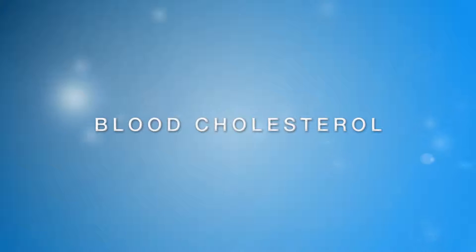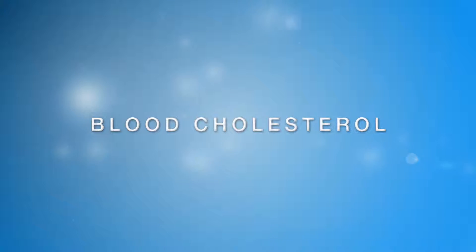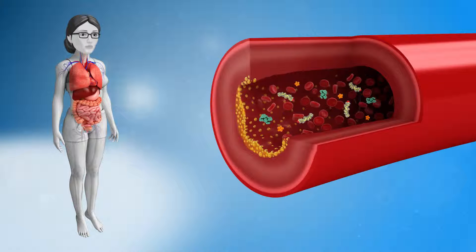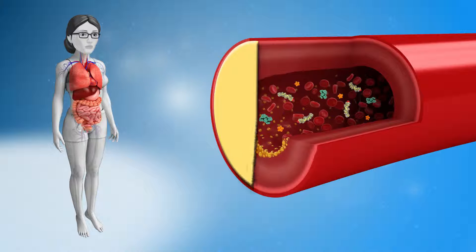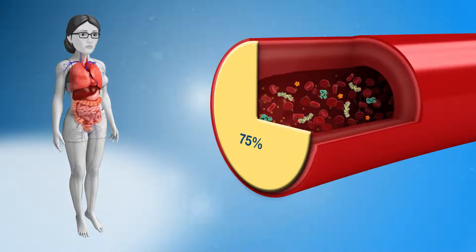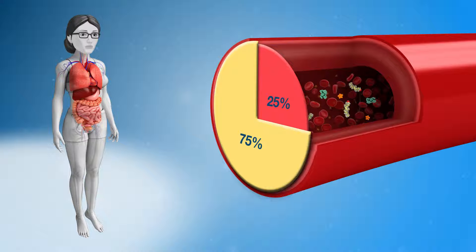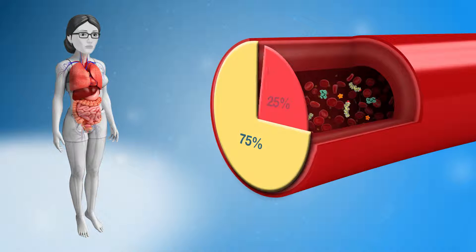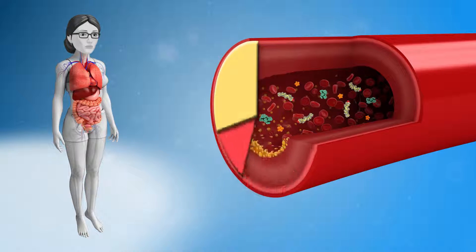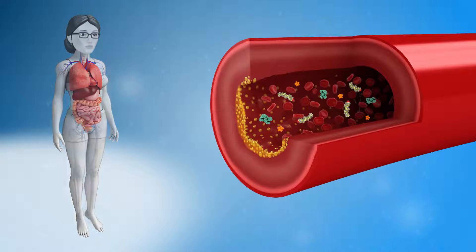The third main risk factor for blood vessel damage is high cholesterol. Cholesterol is a type of fat that is part of all the cells in our body. Approximately 75% of our cholesterol is produced by the liver, with the remaining 25% coming from the saturated fats in our diets. Cholesterol is needed for normal body functions; however, too much can increase the development of atherosclerosis.